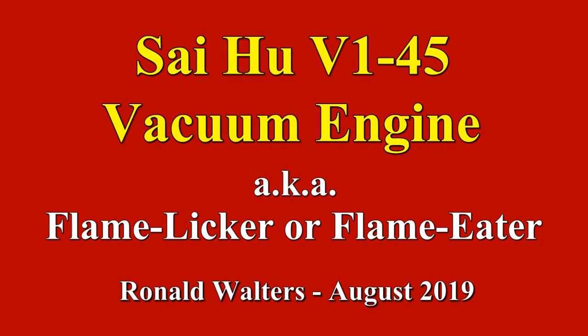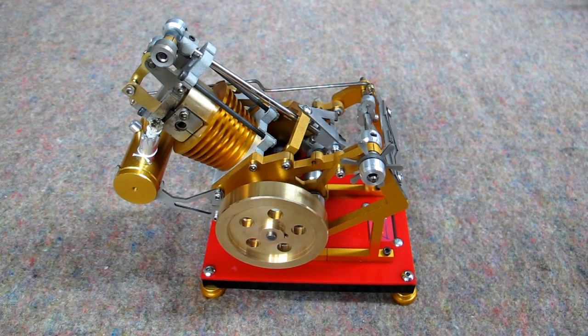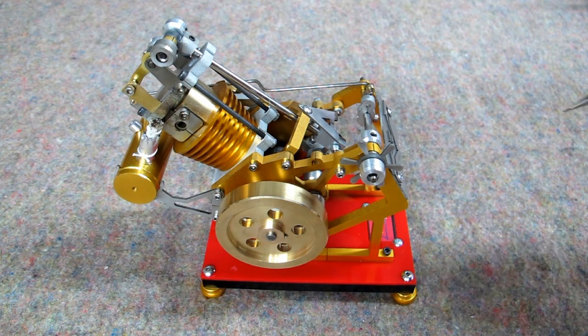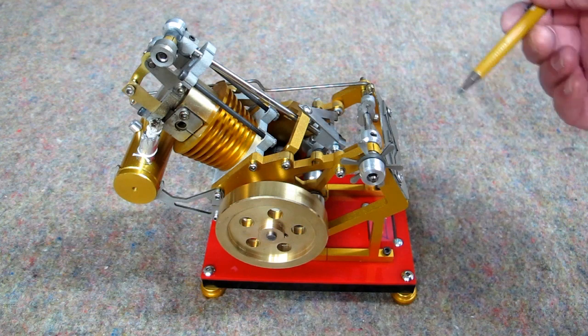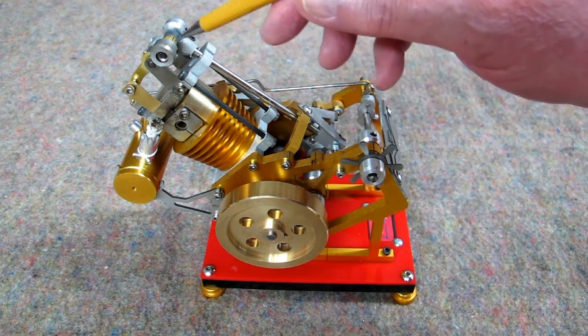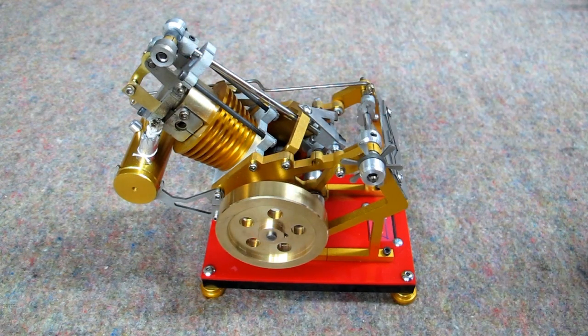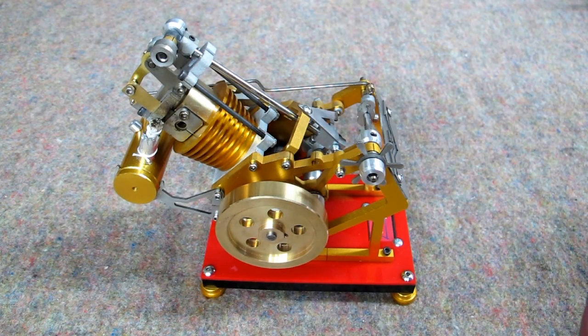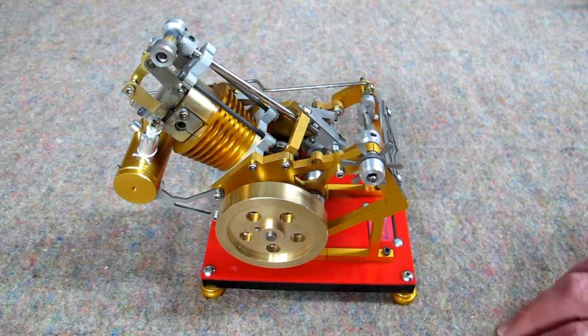This is the V145 flame licker, flame eater, or vacuum engine. It's made out of anodized aluminum or aluminium for all of those outside of the U.S., and a few pieces of stainless here and there. The cylinder is brass and it appears the piston is brass. The flywheel is brass.